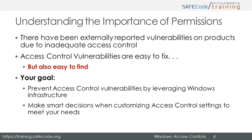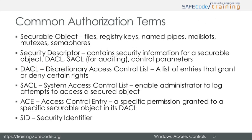Here are some terms to become familiar with. Securable object: a securable object is an object that can have security information associated with it through the use of a security descriptor. Examples are files, registry keys, named pipes, mail slots, mutexes, and semaphores.